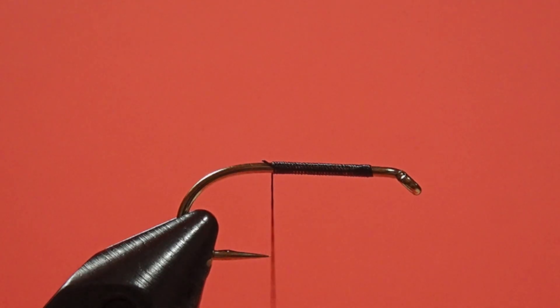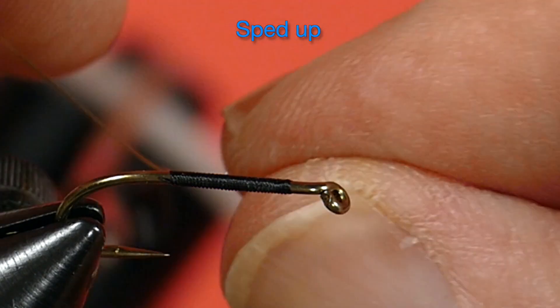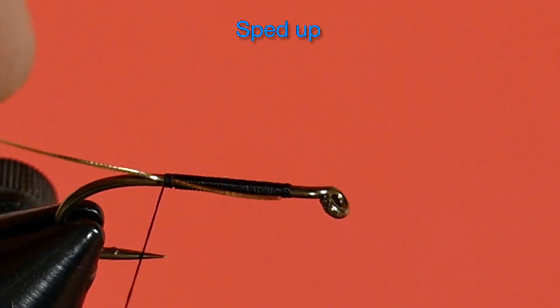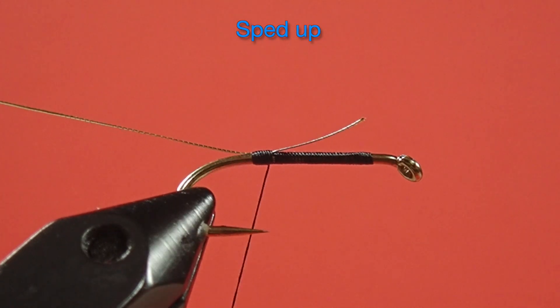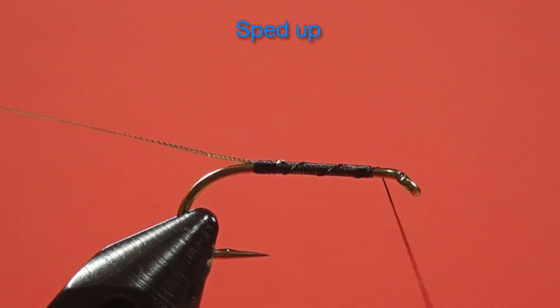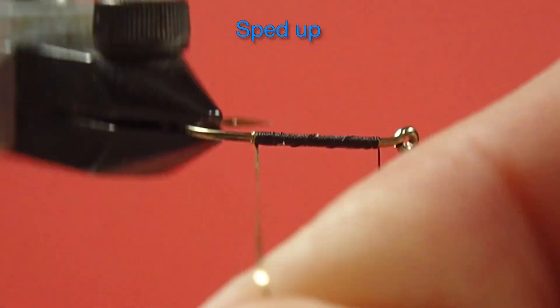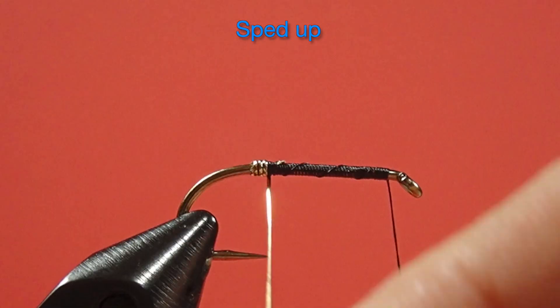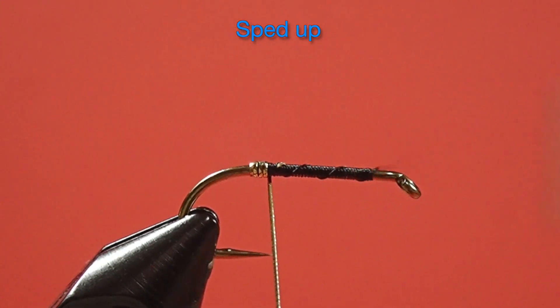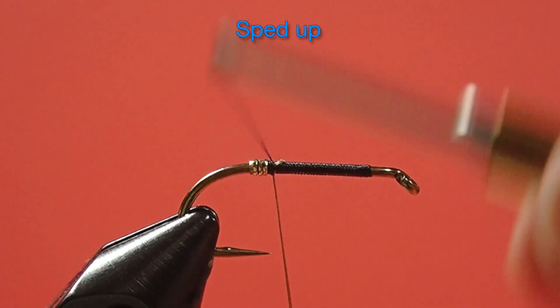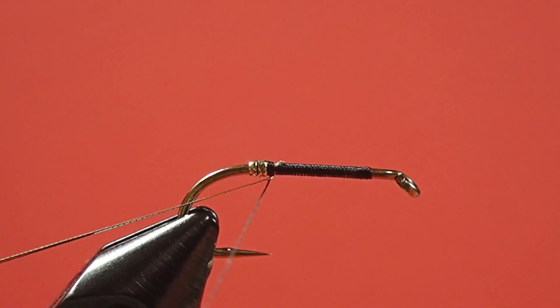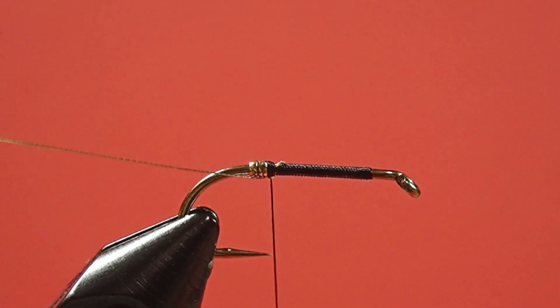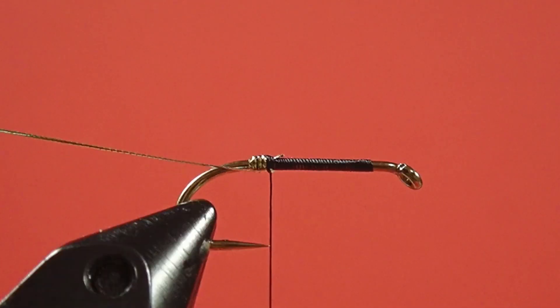Okay, now for our tag and rib. We fold it back and trap it. Now we tie in our floss.